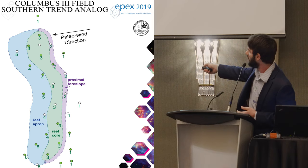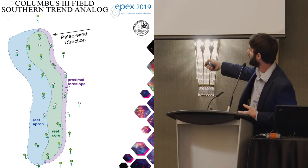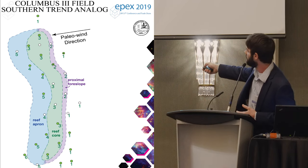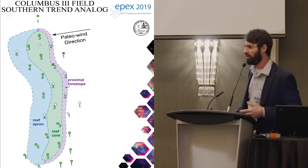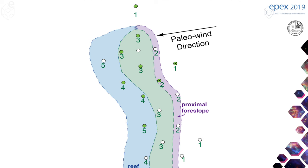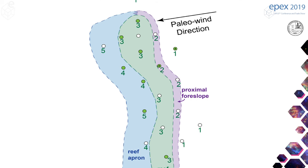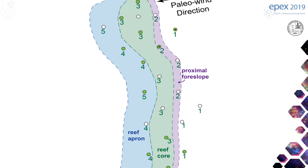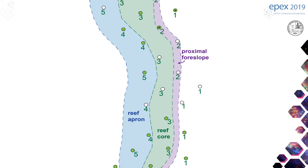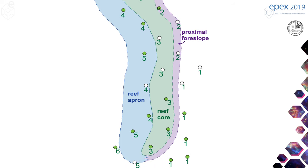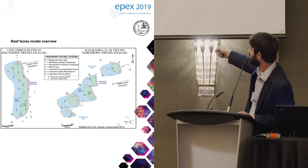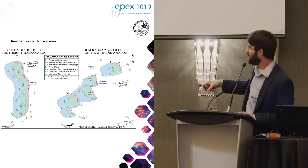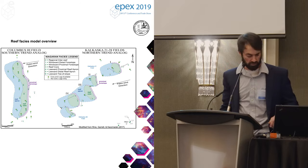We've built this model on Columbus 3 field. All the green dots have core, and I can't even begin to express how without the core you just can't build these models — there's too much interpretation. With a complete section of core this is what we've built this model off of, and we've taken it to other reefs too, done a similar workflow, and been able to categorize them like this.